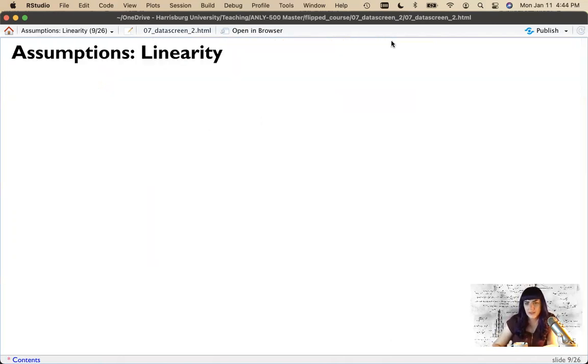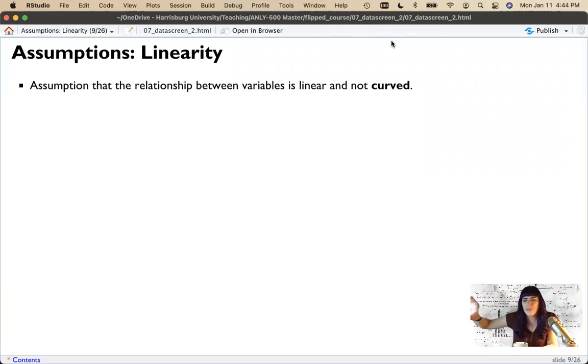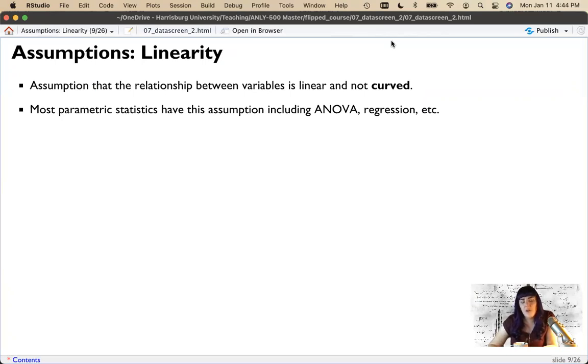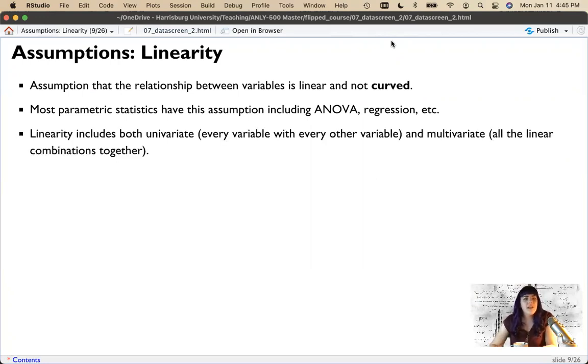The second assumption we're going to test here is linearity. And linearity is the assumption that the relationship between your variables is linear and not curvilinear. There are curvilinear relationships between many different things or any kind of something with a bend in it. But for the parametric statistics that we're going to learn, we want everything to be linear. ANOVA regression, these are all forms of what's called least squares math, which is linear. It's called the general linear model for a reason.